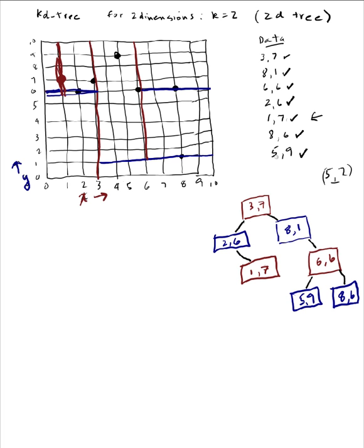And then last we have 5,9 — 5 is greater than 3, 9 is greater than 1, 5 is less than 6. So here's my 5,9 right here: 5 is greater than 3 so it's on this side, 9 is greater than 1 so it's in here, and 5 is less than 6 so I'm now in this area. I'll draw the area I'm at right here — 5 is less than 6 right there, so that's where my 5,9 point is. When I insert that new point, it's going to cause a partition of the y dimension inside that area right here.